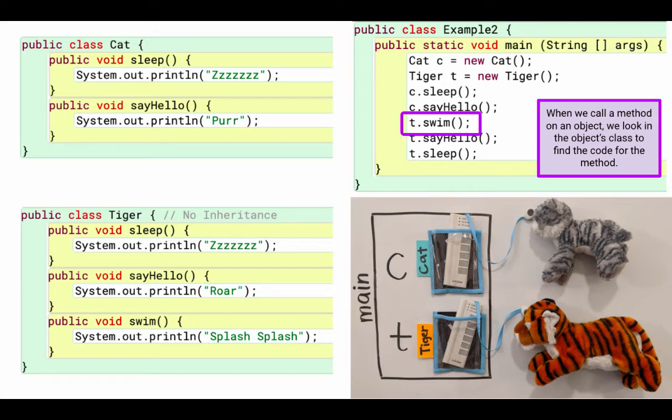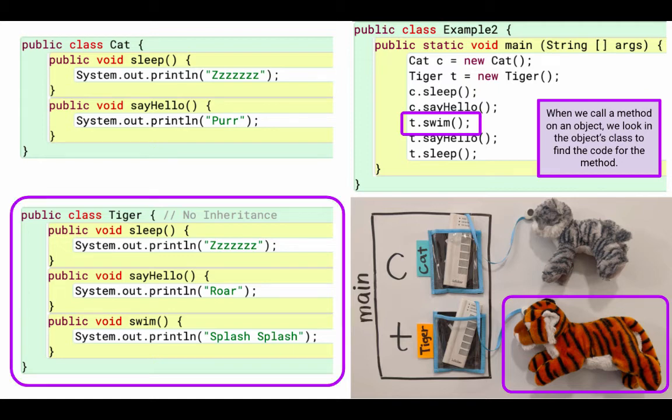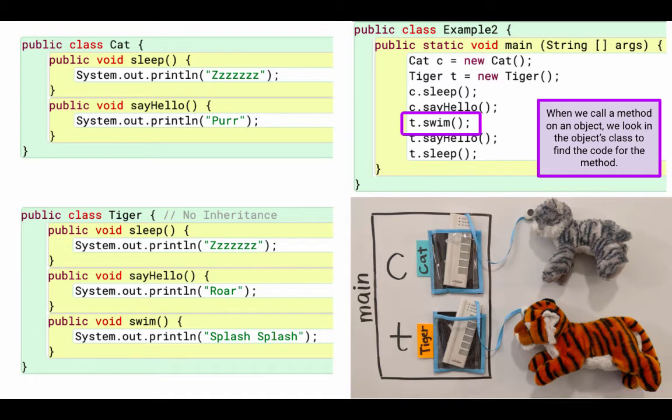Now we're going to execute t.swim. So t is referencing that tiger. So we're going to look in the tiger class to find the code for that method. So we look in the tiger class over on the left, and we find the swim method there. And it says splash splash. Okay, so now we've finished executing t.swim.